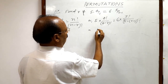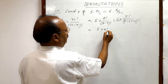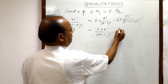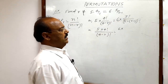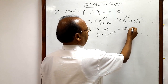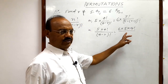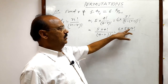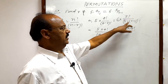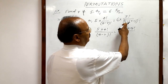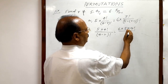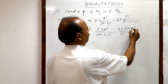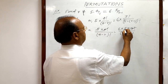Let us simplify. This equals 5 into 4 factorial divided by (4 minus r) factorial. On the right side, 6 into 5 factorial can be written as 6 into 5 into 4 factorial, since 5 factorial equals 1×2×3×4×5. The denominator becomes (5 minus r plus 1) factorial, that is (6 minus r) factorial. Now 4 factorial cancels from both sides, and 5 cancels as well.